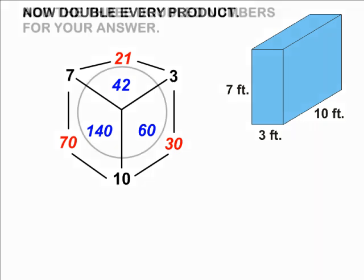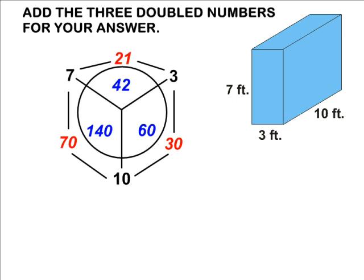Take those three numbers and add them. The sum of 42, 60, and 140 gives us a sum of 242. So we would say the surface area of this rectangular prism is 242 square feet. And that is another method of how you can calculate the surface area of a rectangular prism.